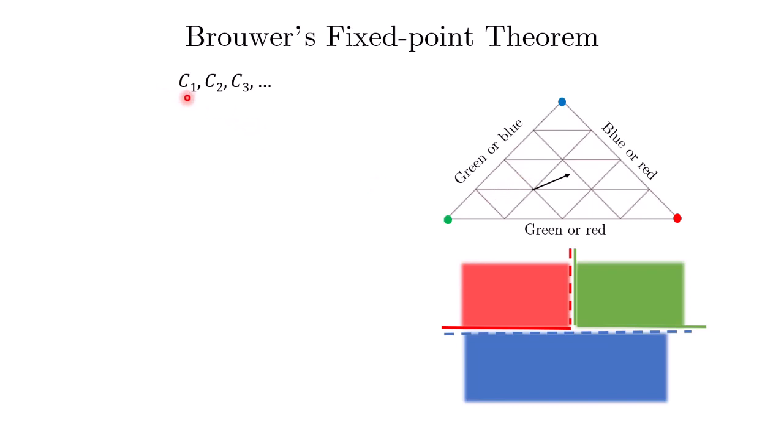We have a sequence of rainbow triangles. After the finer triangulation, we repeat with yet another, yet finer triangulation and so on. This way we obtain a sequence of rainbow triangles that are successively smaller and smaller.